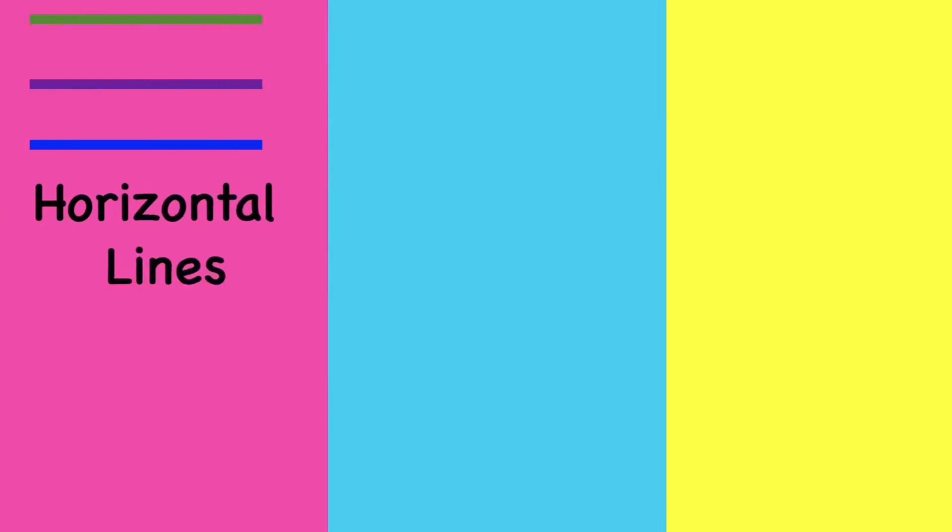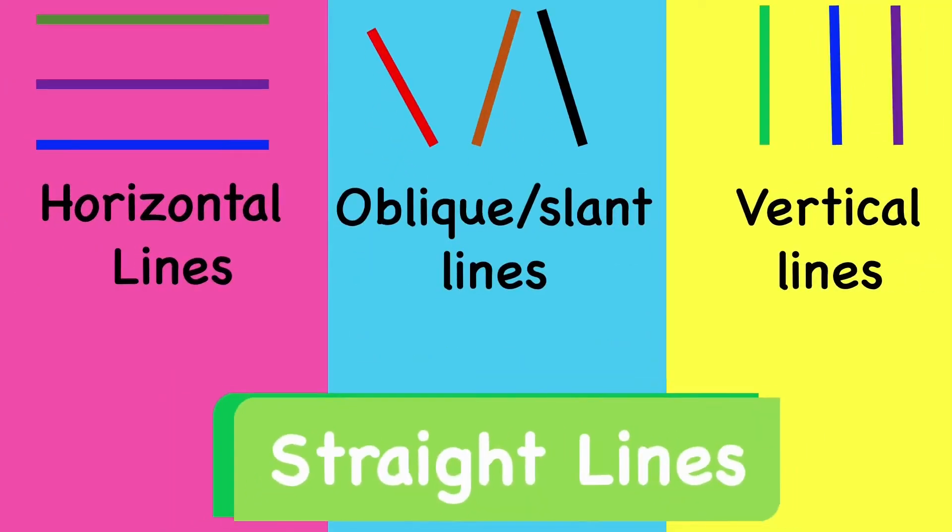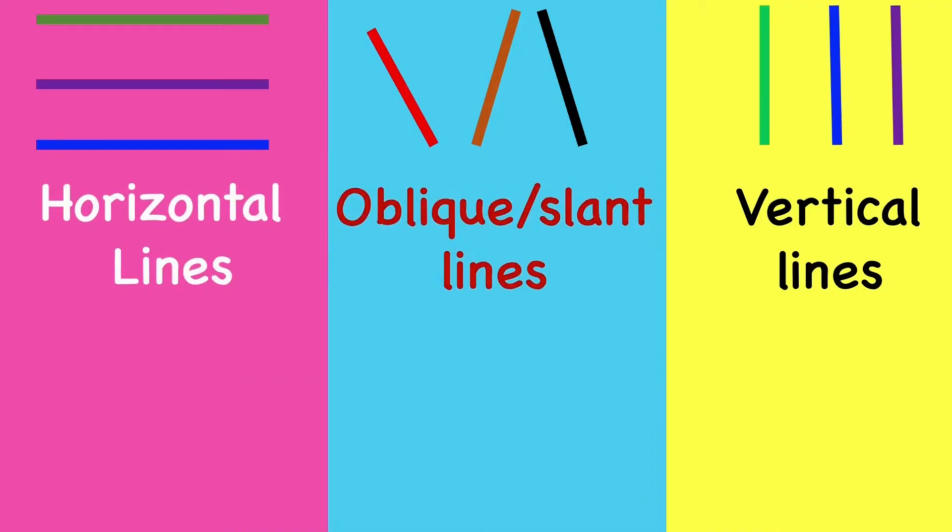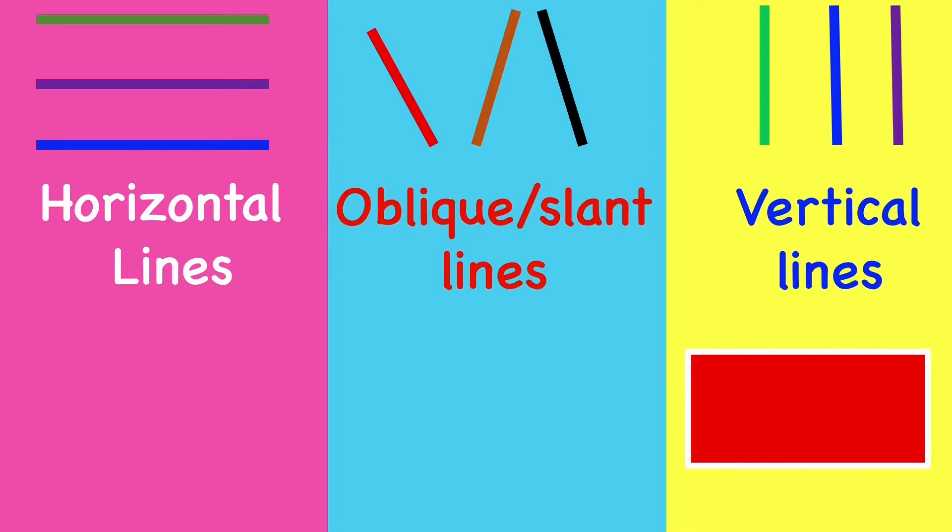All these different types of lines are called straight lines. They are used to design different shapes, such as a rectangle, a square, and a triangle.